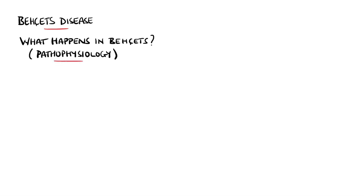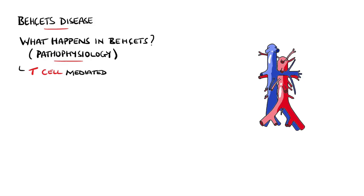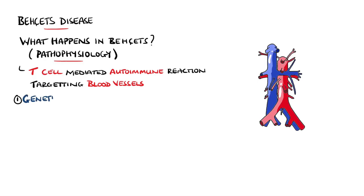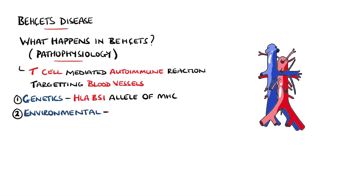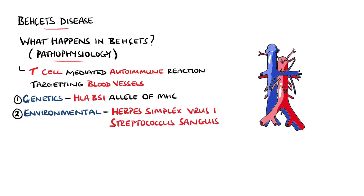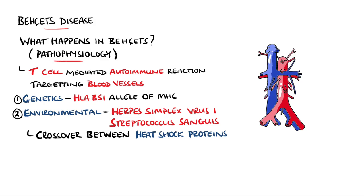The exact cause and pathophysiology of Behçet's disease is not clear, but it is primarily characterised by an autoimmune reaction targeting the blood vessels. The inflammation is primarily T-cell mediated. Several components contribute to this autoimmune reaction. Genetically, there seems to be a strong correlation between Behçet's disease and the HLA-B51 alleles of the major histocompatibility complexes. Environmental factors include an association with infection, primarily herpes simplex virus 1 and Streptococcus sanguis.